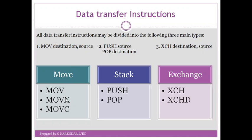The second category is stack instructions. We have two instructions under the stack: PUSH and POP. For the PUSH instruction, when you want to push data onto the stack, you write PUSH followed by the source. When you want to get data out of the stack, you write the POP instruction followed by the destination. The source and destination can be any of the memory locations or registers.